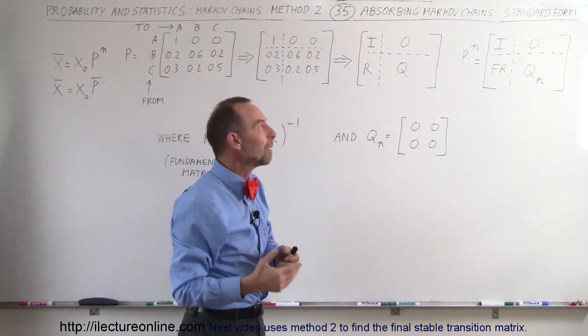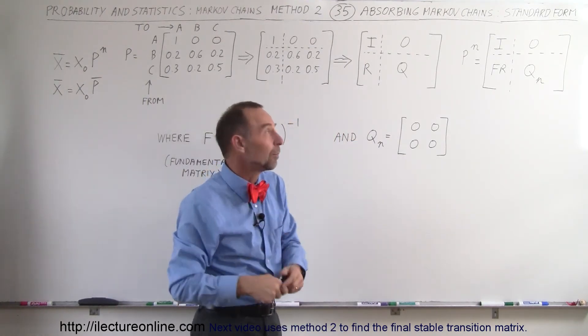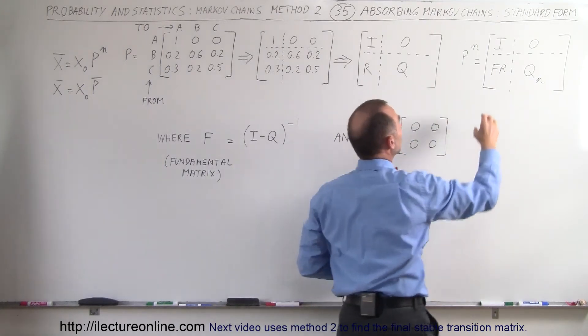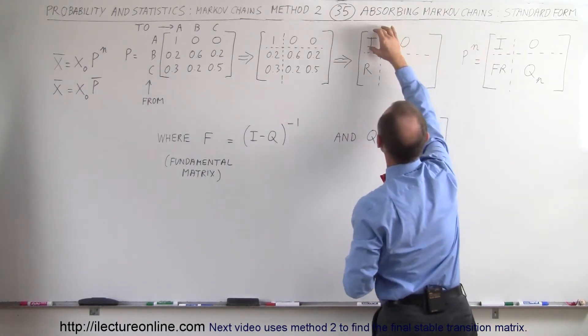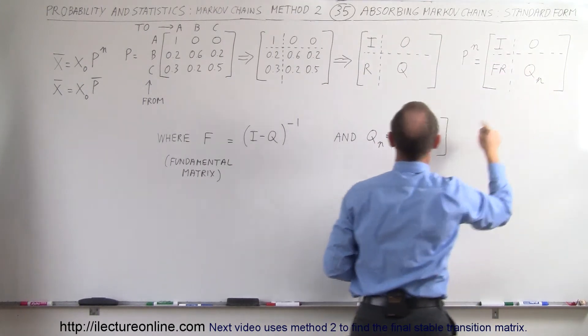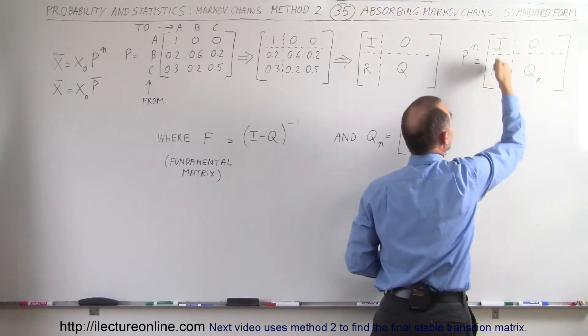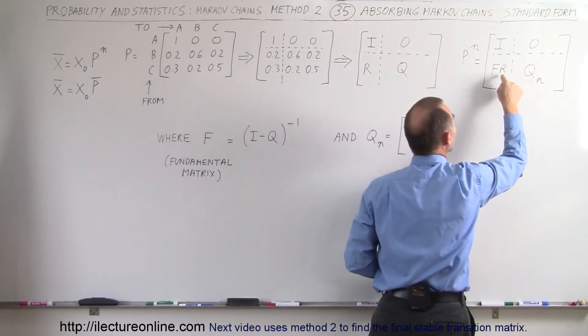We can say that P to the n power, when n becomes a really big number, or in essence the stable transition matrix, will be equal to the identity matrix, the zero matrix, the Q sub n matrix where Q sub n will be all zero. We end up with all zeros over here, and here we end up with the F matrix times the R matrix.